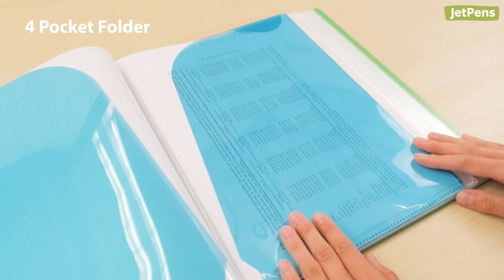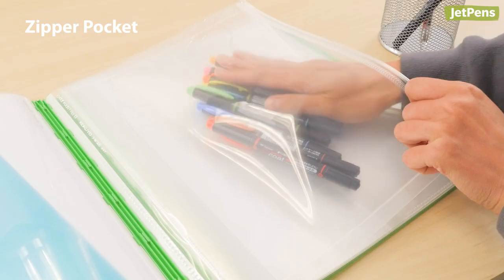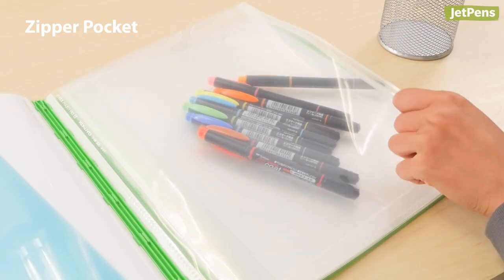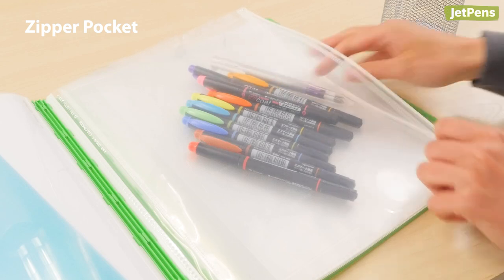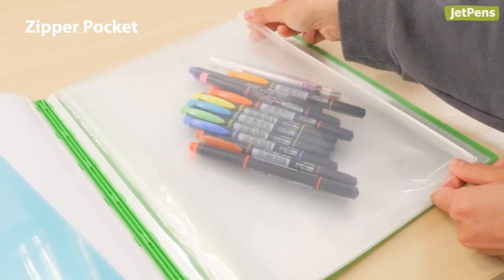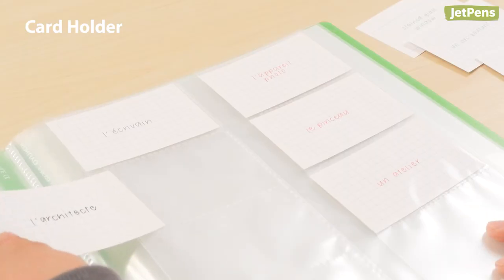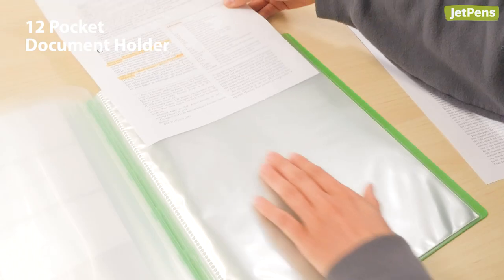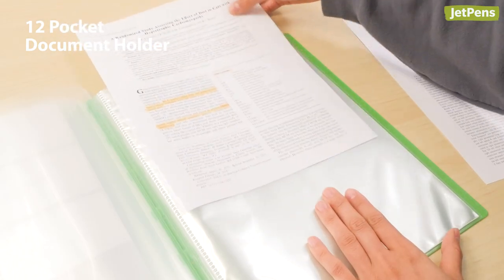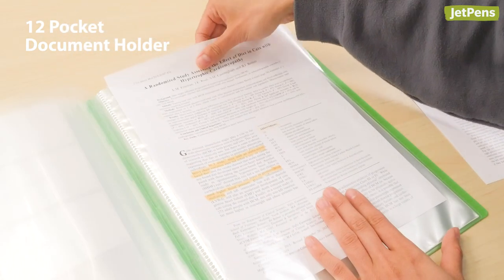You can keep loose papers in the four pocket folder, store your stationery essentials in the zipper pocket, collect your flashcards in the card holder, and organize your handouts and notes in the 12 pocket document holder.